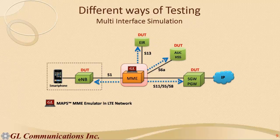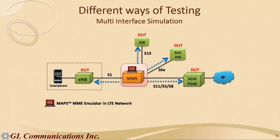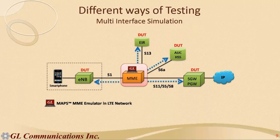The next approach is multi-interface simulation. The user has DUTs such as E-NodeB, HSS, HGW, and PGW, but wants the MME to be simulated. GL provides this flexibility — the MME can communicate with different interfaces or different applications on the network. GL MAPS can simulate the S1AP interface, S6A, S13, S5/S8, and other entities. It is a multi-interface simulation where MAPS communicates with different nodes in the network or with the DUTs, with a single application handling multiple protocols: LTE S1, EGTP, and Diameter.